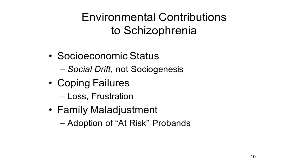Still, there are some stressors that have been causally linked to schizophrenia, including coping failures, losses and frustrations, and family maladjustment. It can happen that children who have been identified as at risk for schizophrenia are adopted into families where there's a fairly high level of mental illness to begin with. When children at risk for schizophrenia, so-called probands, are adopted into families where there's already a fairly high level of mental illness, those children are much more likely to become schizophrenic themselves compared to other probands adopted into families without such maladjustment.